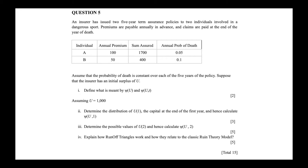We're given a table that includes who the individual is, their annual premium, their sum assured, and their annual probability of death. We're told to assume that the probability of death is constant over each of the five years of the policy, and suppose that the insurer has an initial surplus of u.